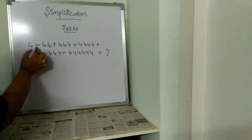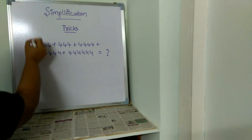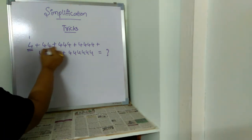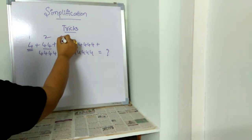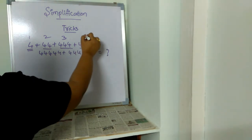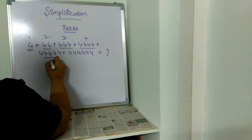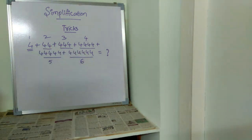First, we need to count how many 4s are there. Before each plus, there's one 4 so the count is 1. Here there are two 4s, count is 2. Here there are three 4s, count is 3. Four 4s, count is 4. Five 4s, count is 5. Six 4s, count is 6.